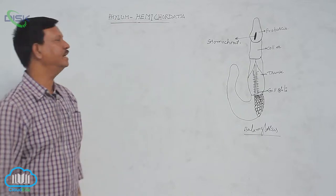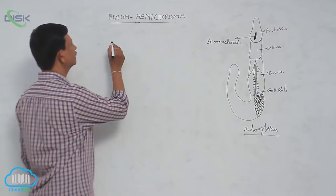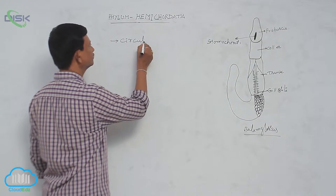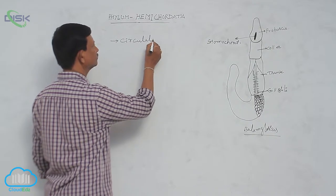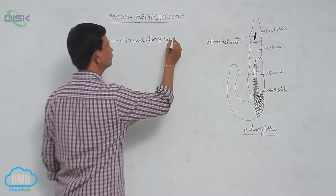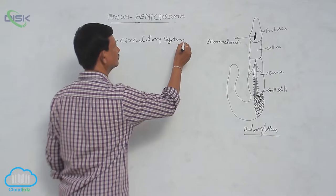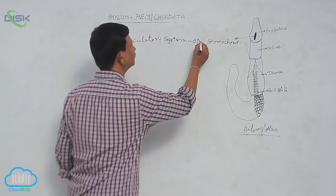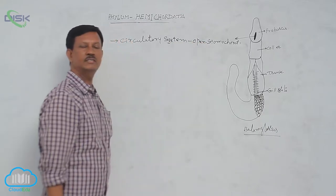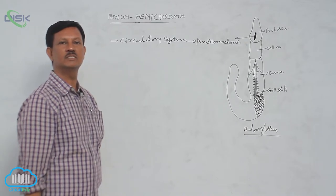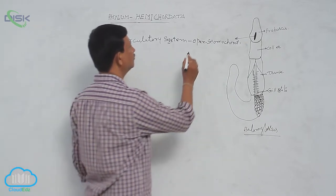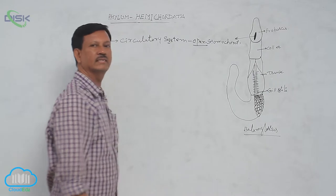In Hemichordata, an open type of circulatory system is present. Unlike chordates which usually have a closed blood vascular system, here an open type of blood vascular system is present.